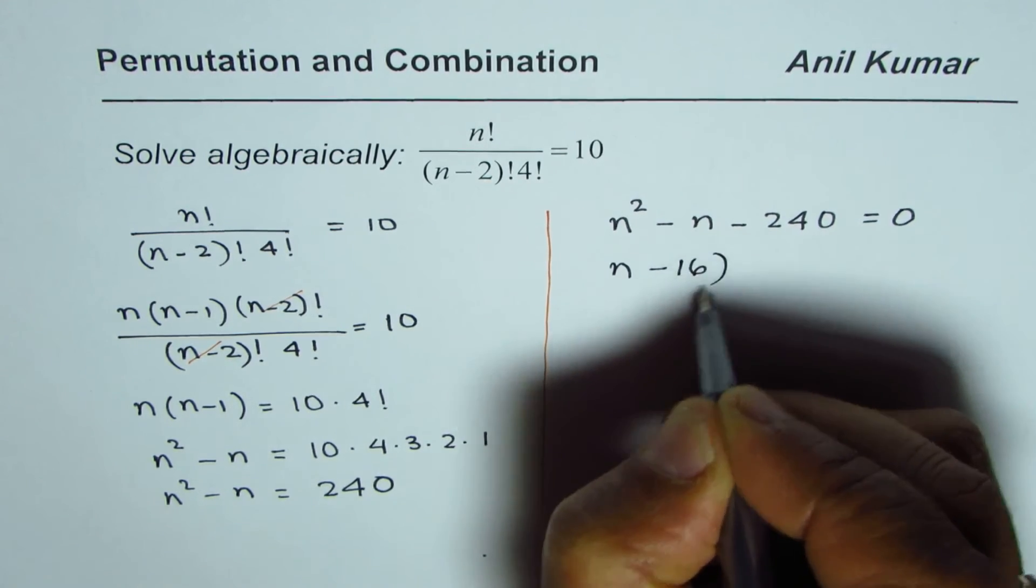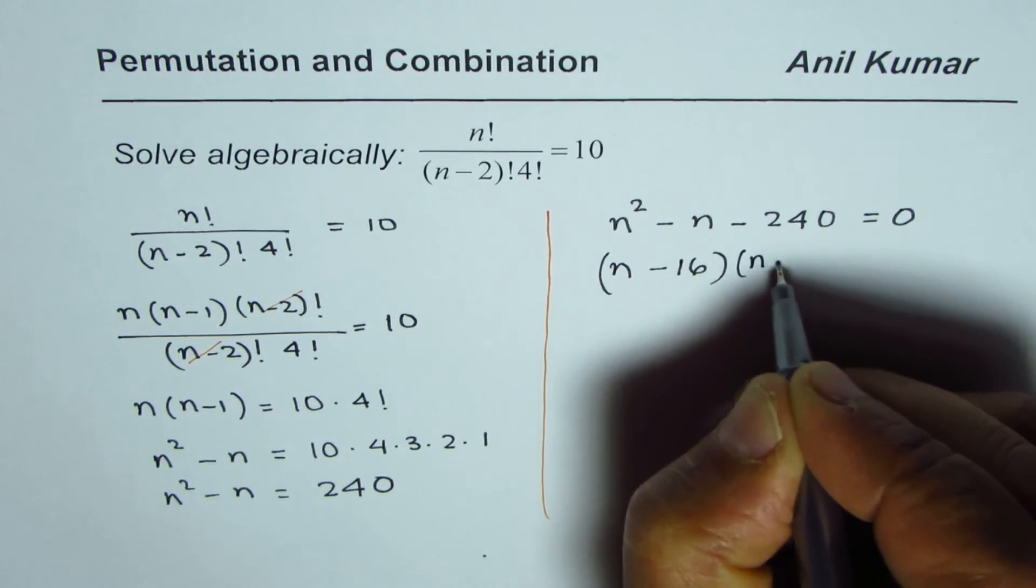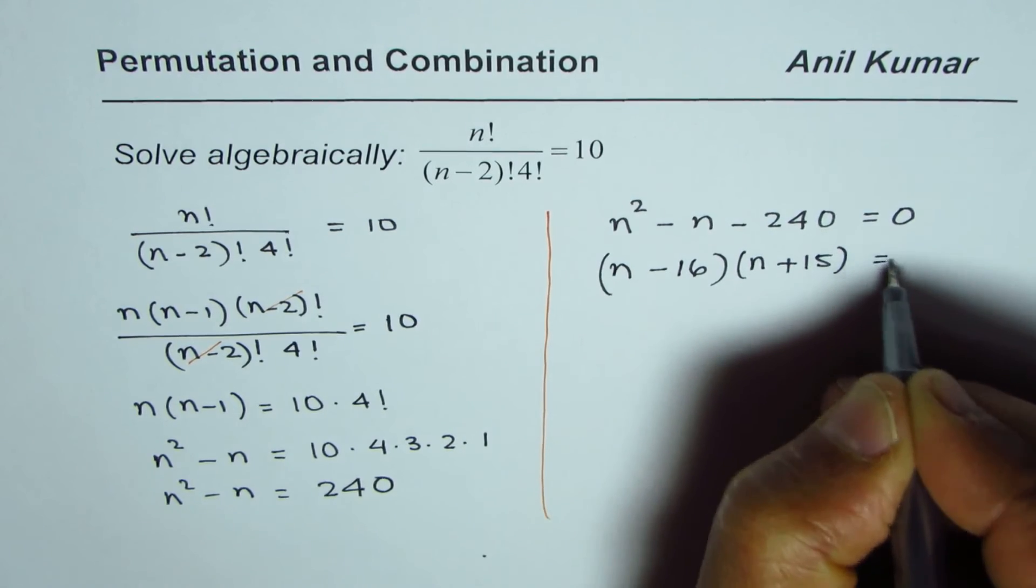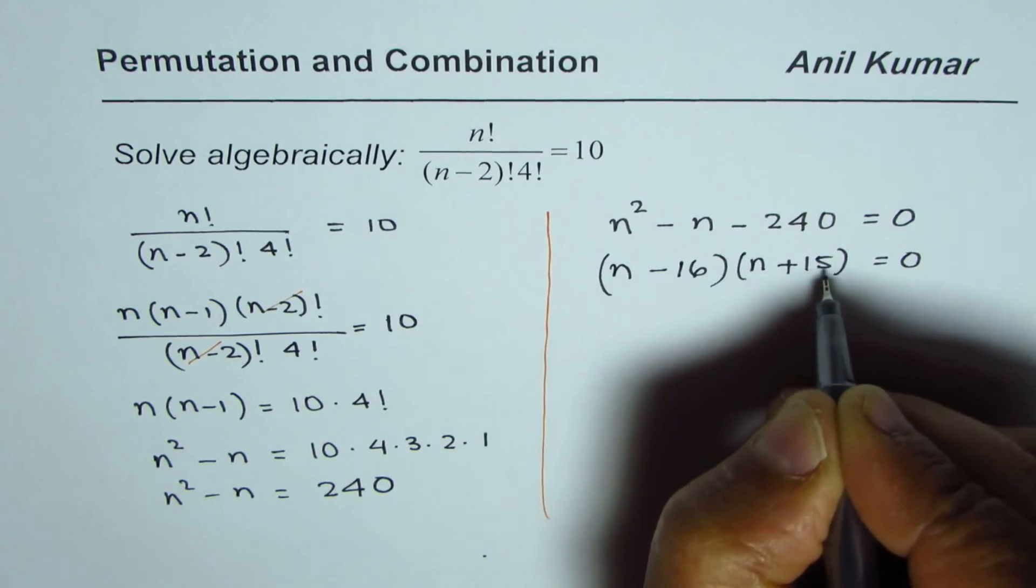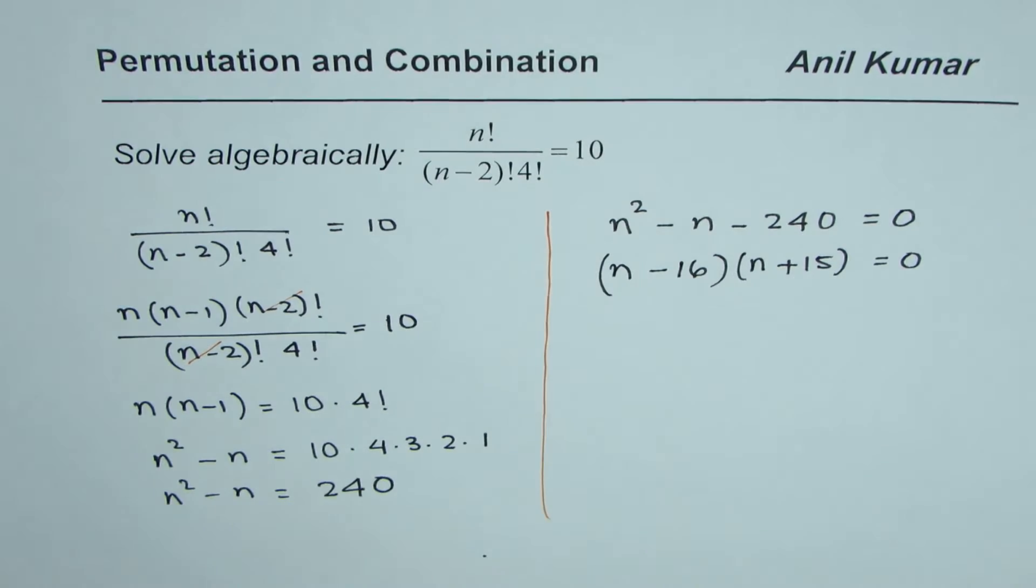So n minus 16 times n plus 15 should be equal to 0 and 15 times 16 is 240, minus times plus is minus. We do get our result.